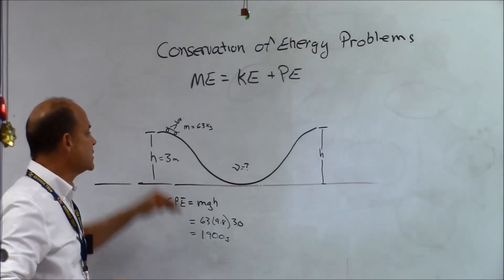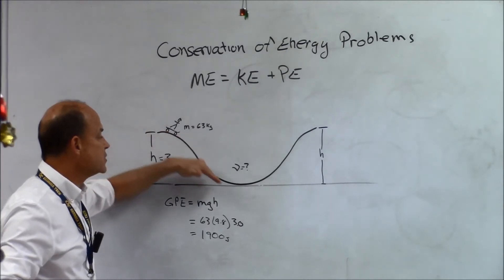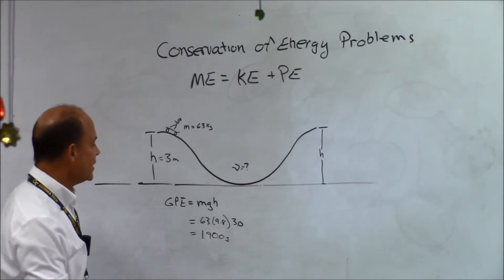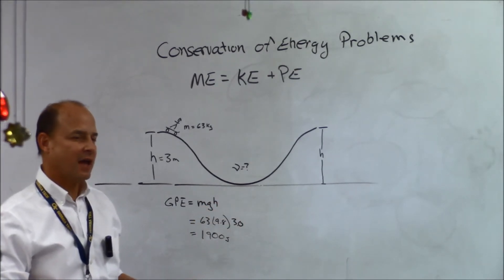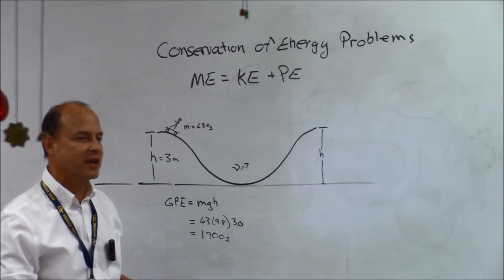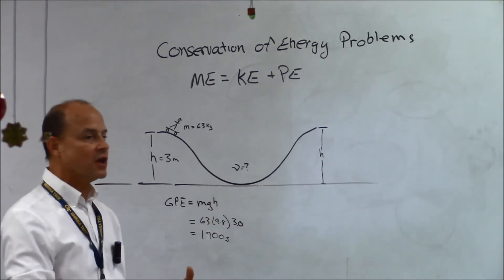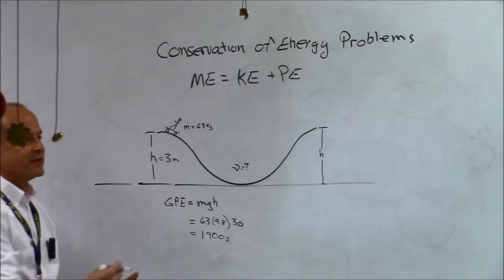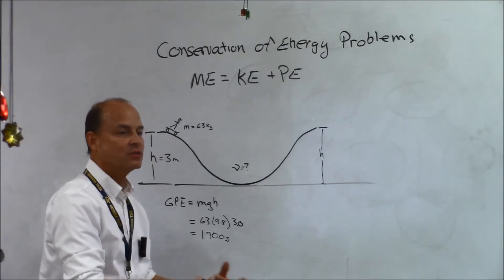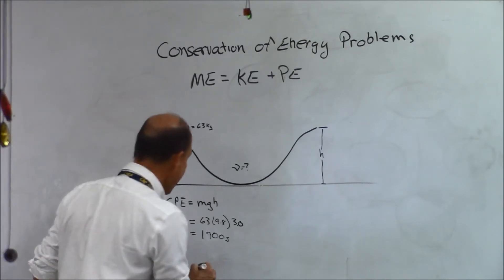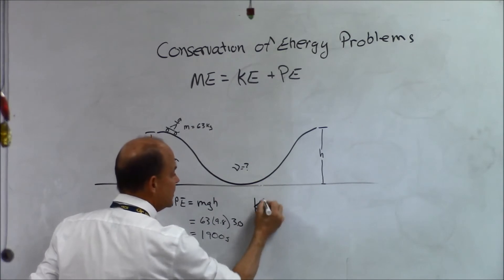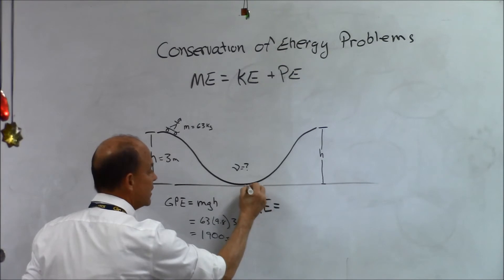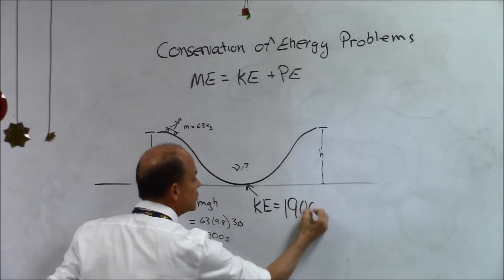Now if no energy is lost in the system, how much energy is he going to have at the bottom of the hill? The same, right? Now, what kind of energy is that? Is that gravitational potential energy or kinetic energy? So you're telling me that if no energy is lost in the system, he's still going to have 1,900 joules of energy, but it's not going to be gravitational potential energy, it's going to be kinetic energy? So now, I can say KE is equal to, KE at the bottom of the hill, KE at the bottom of the hill is equal to 1,900 joules.